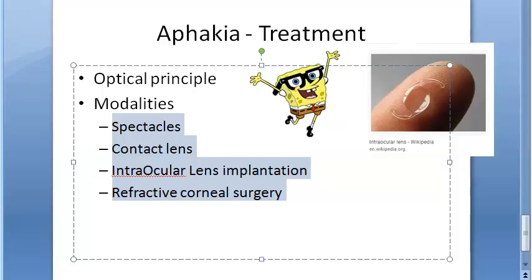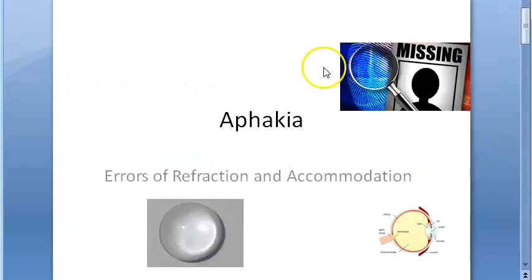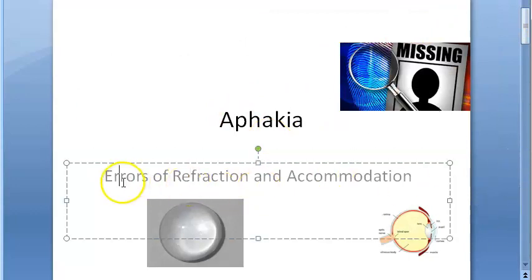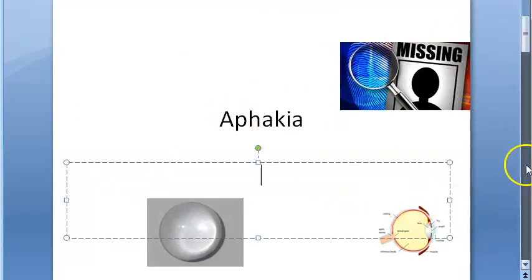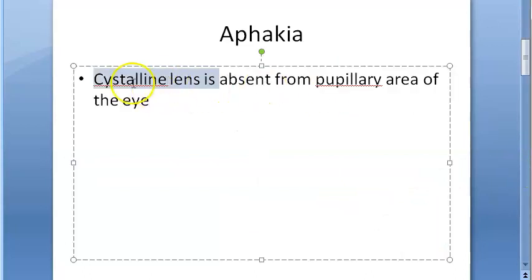Hello, in this video we have to look at the treatment for aphakia. Let's recap what we have seen so far. Aphakia is nothing but the crystalline lens being absent in the eye, or absent from the exact location - the pupillary area. If it is absent, that is called aphakia.